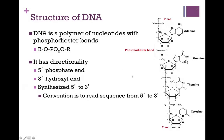Notice in the polymer there is a directionality to it. There's a 5' end with a phosphate connected to the 5' carbon of that ribose, and at the 3' end we have an OH. So these nucleotides are joined together by bringing a 5' phosphate together with a 3' OH. The convention is to read the sequence from the 5' to the 3' end, because that is the order in which they are connected.